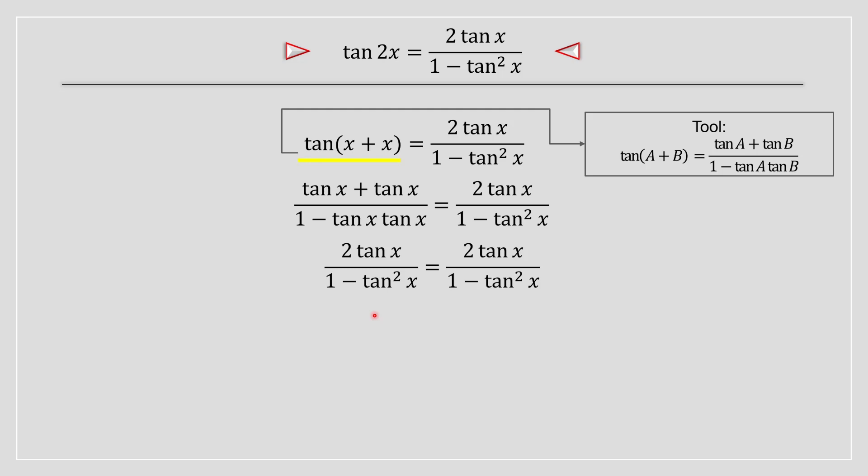So really what we have over here is the left hand side is equal to the right hand side and therefore that implies that tan of 2x is equal to 2 tan of x divided by 1 minus tan squared of x.